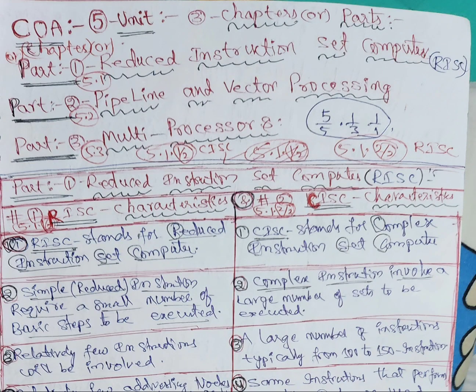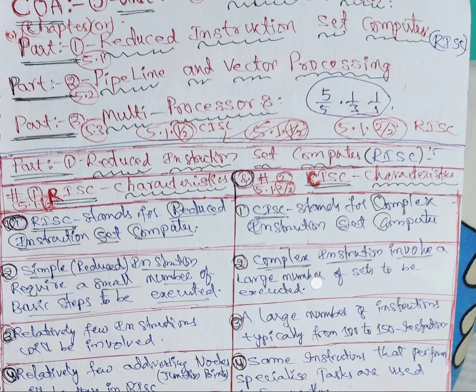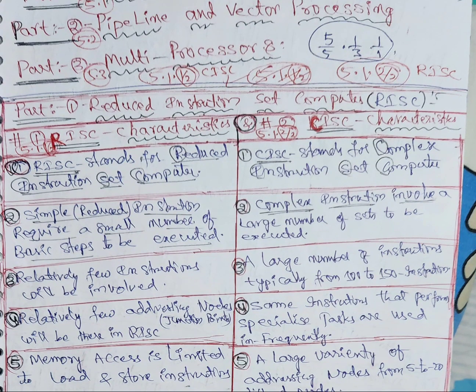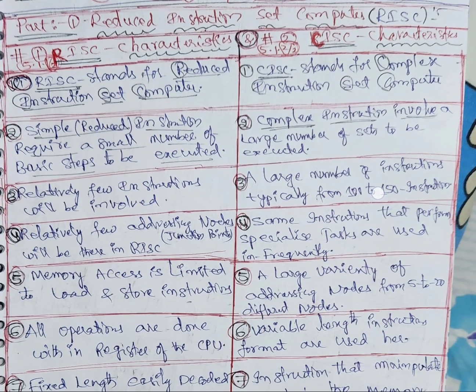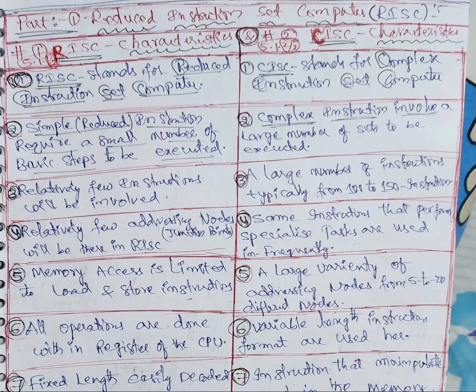Hi everybody, I am Prasad. Now we are going to cover RISC Architecture and CISC Architecture. I have already recorded videos on RISC Characteristics and CISC Characteristics. There is a difference between RISC Characteristics and CISC Characteristics — we covered three questions. If you simply explain about RISC characteristics, you write the left side box, and CISC characteristics means the right side box. That video is already covered. Now we are going to see architecture.